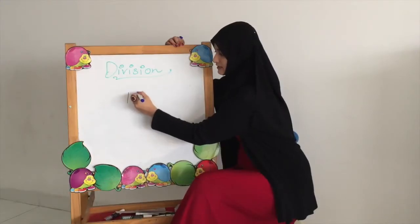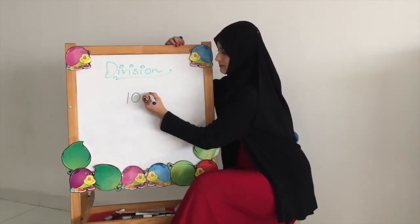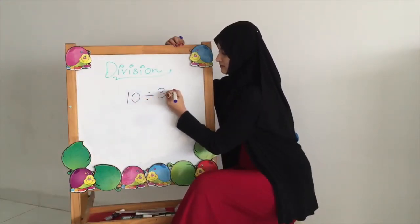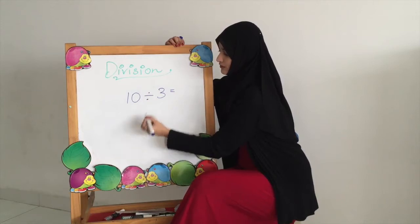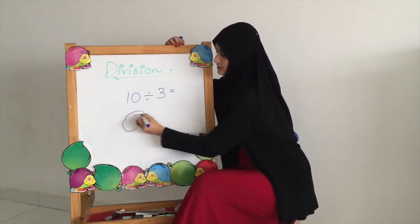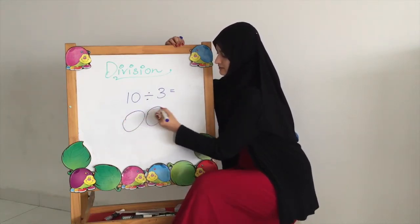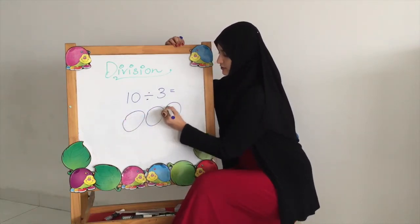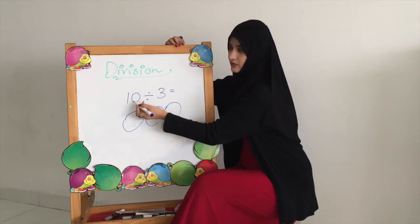10 divided by 3. We are going to make 3 sets. We are now going to distribute the number 10 equally.